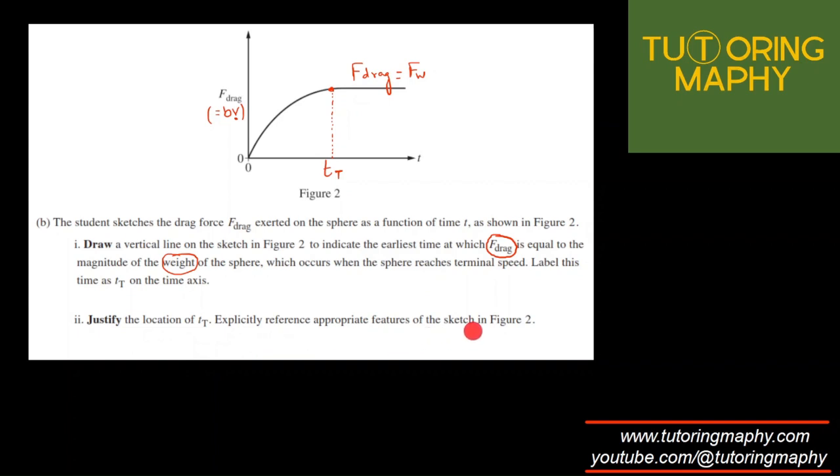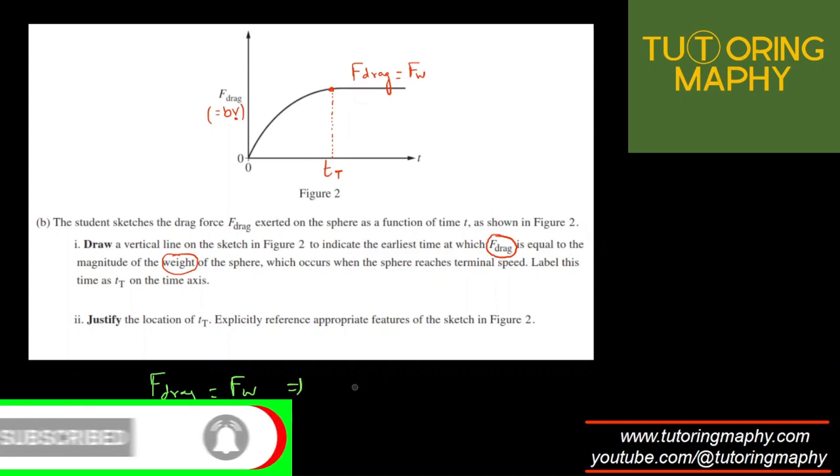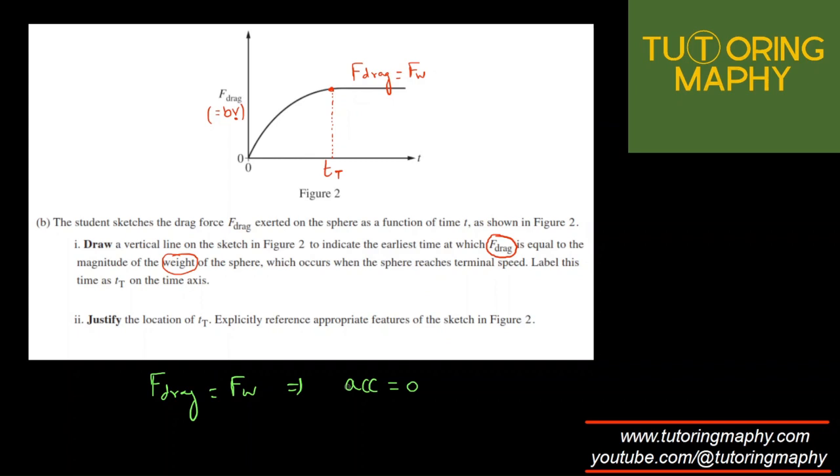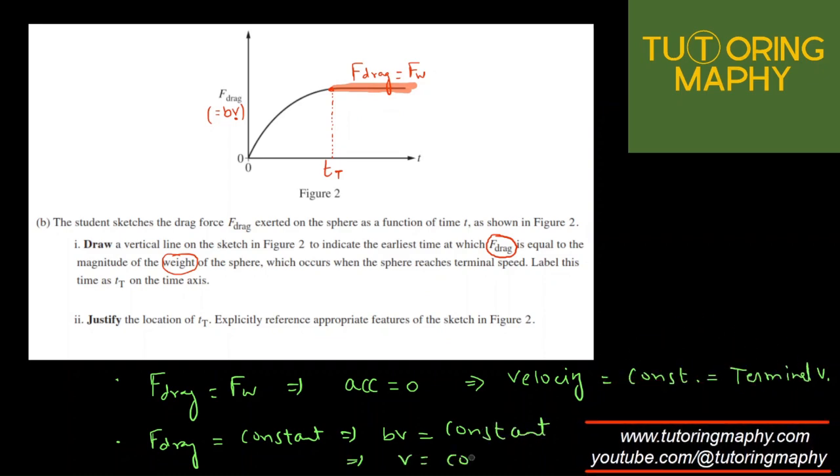Justify the location of t_t explicitly reference appropriate features of the sketch. So we already mentioned that, but I can definitely write mathematically that F_drag, when it is equal to F_weight, this would mean that the acceleration of the system will become zero, which means that the velocity will become constant. And the constant velocity is nothing but the terminal velocity. We can clearly see that at that point, the curve flattens. Here the curve flattens, which means that F_drag is constant. And what is F_drag? F_drag is BV. So BV is constant. B is anyway a constant. So this would mean that V is also a constant. So that's what justifies that this is where the velocity is constant and it reaches the terminal speed.